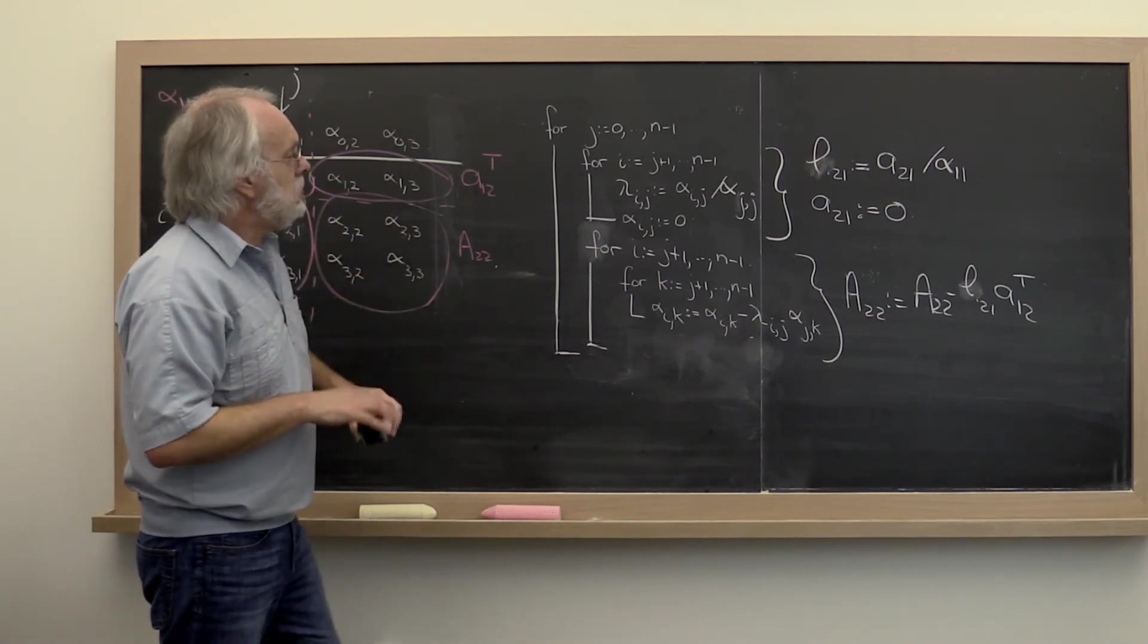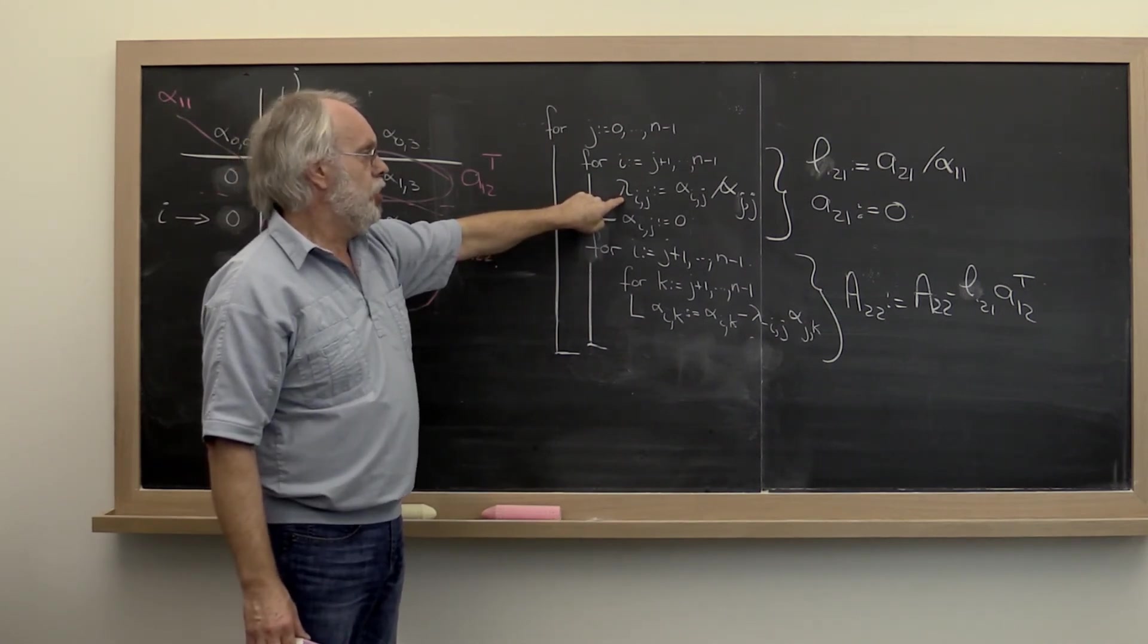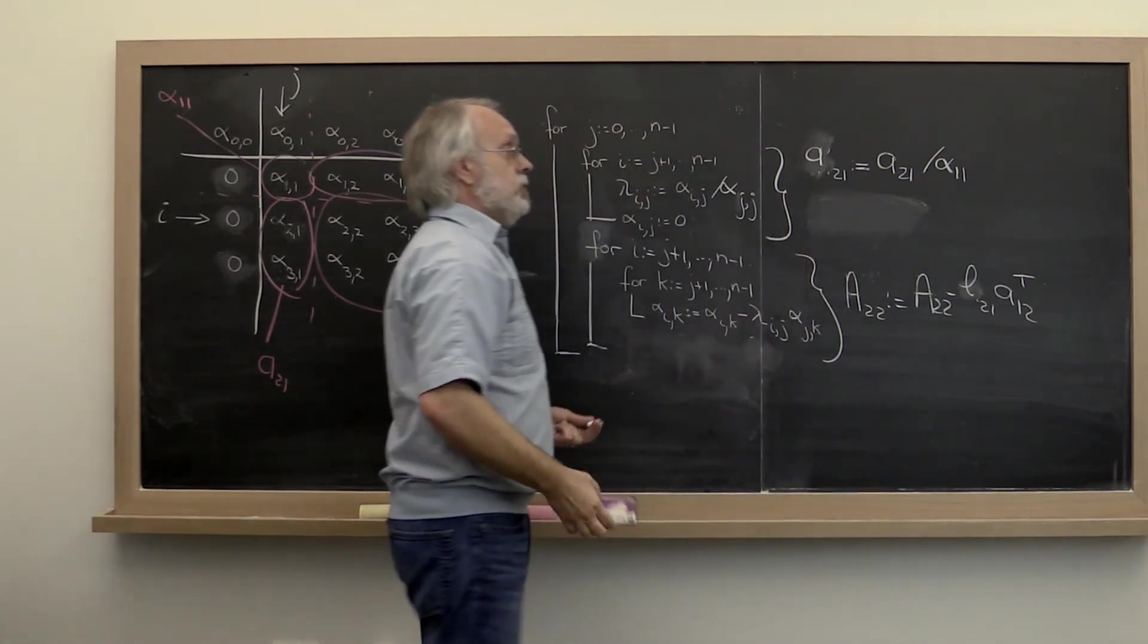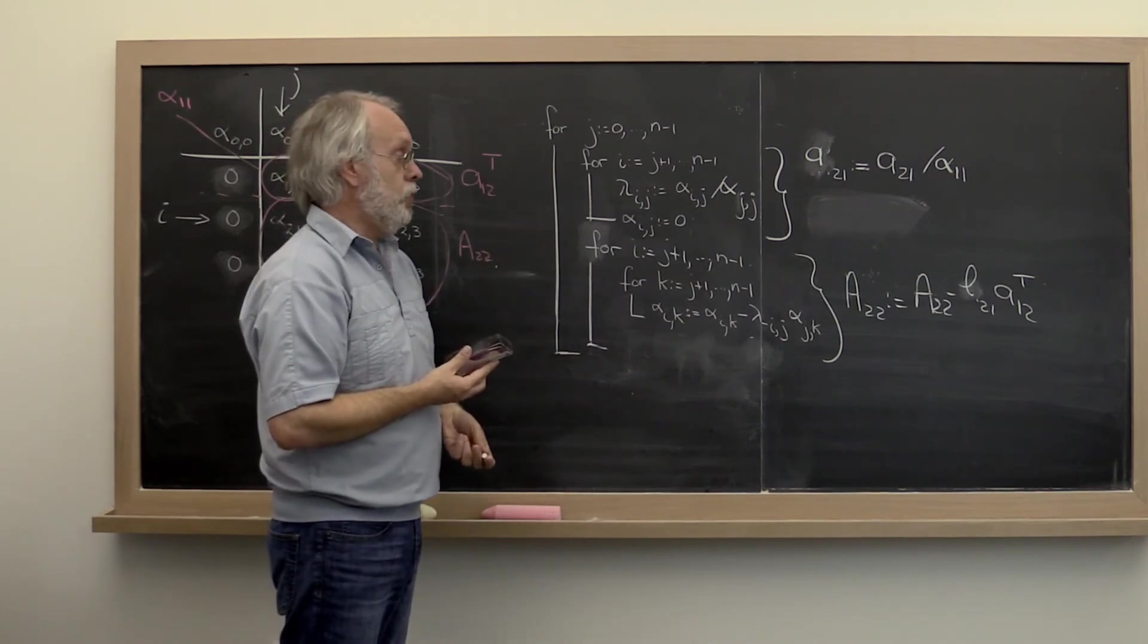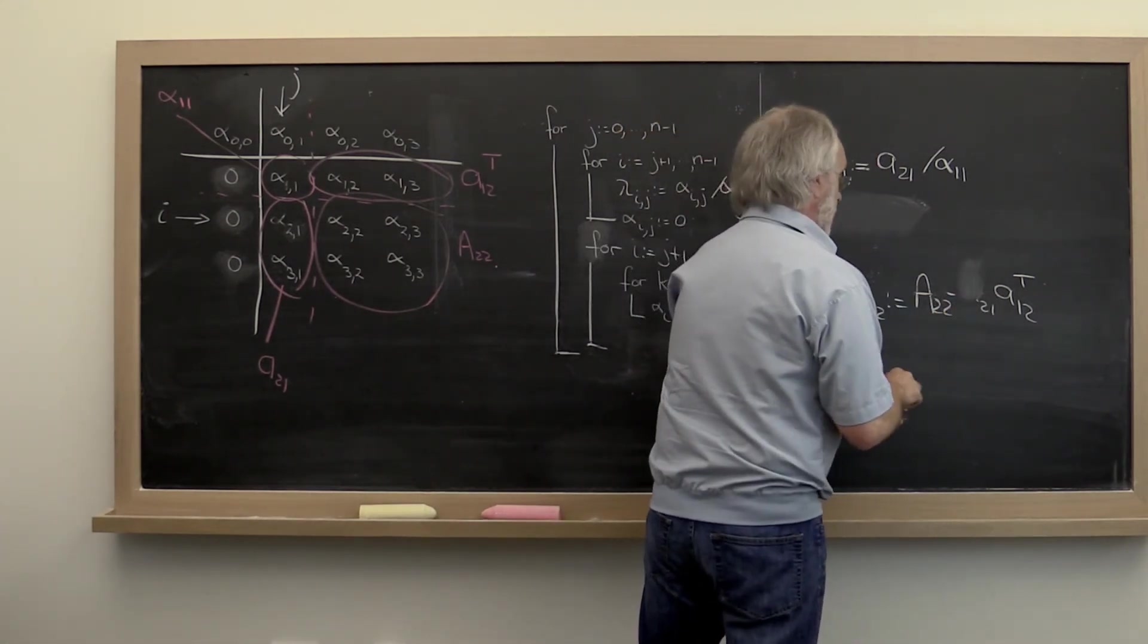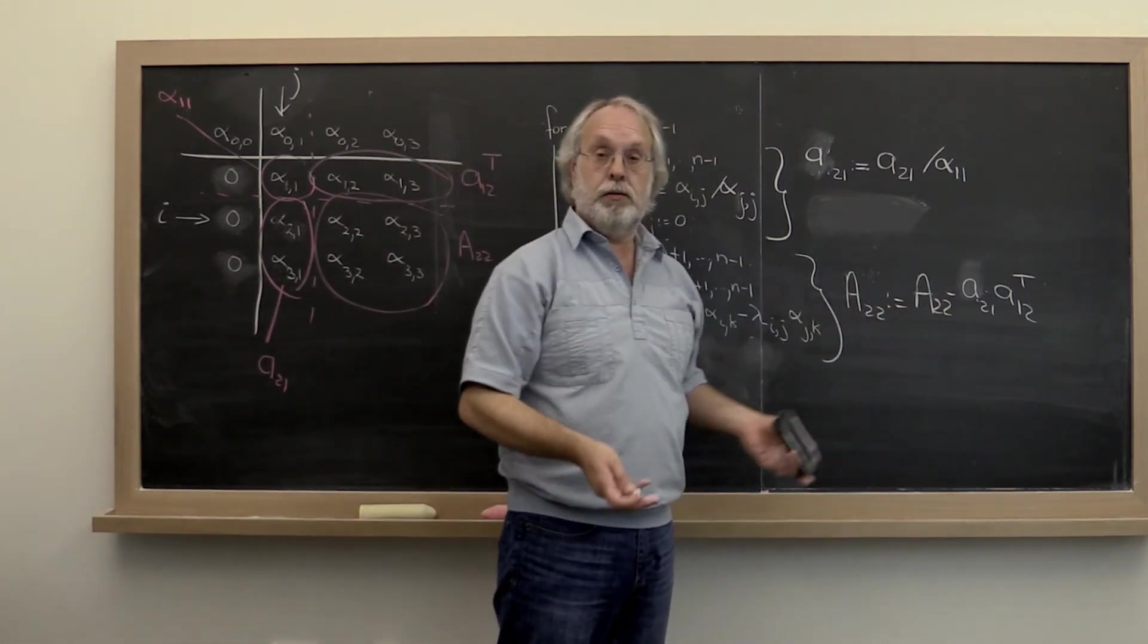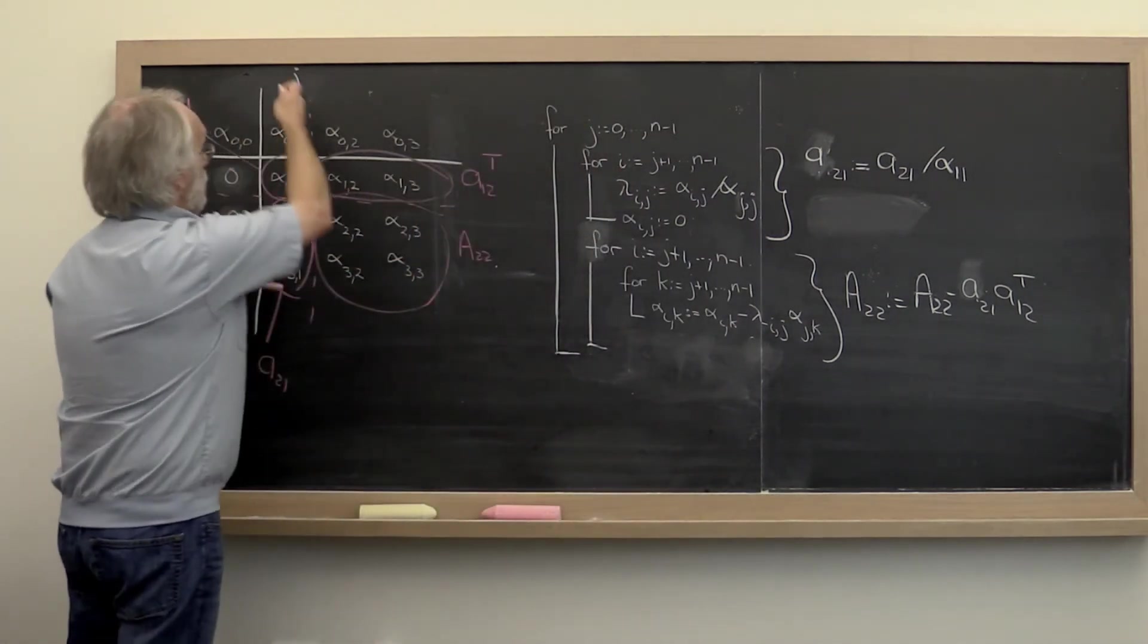Instead of creating separate multipliers in a separate vector, couldn't we just overwrite a_2,1 and then not set a_2,1 to 0? Now we have stored the multipliers in the elements that are being set to 0. In which case, instead of multiplying by l_2,1, what we want to do is use a_2,1. We want to take the outer product of a_2,1 with a_1,2 transpose because a_2,1 has been overwritten by the multipliers. Then we're done with the current column and move forward.